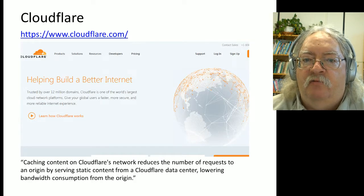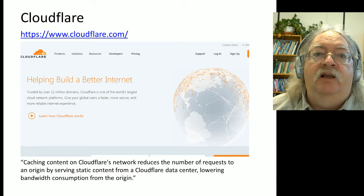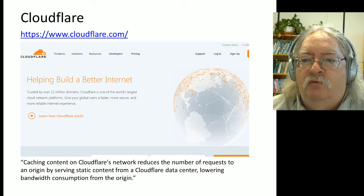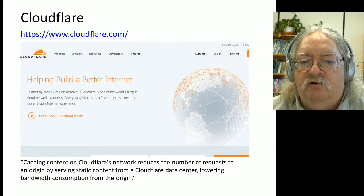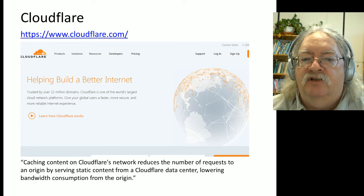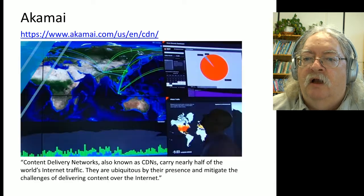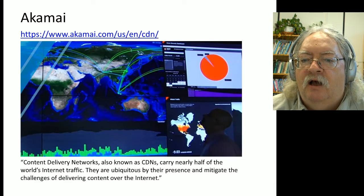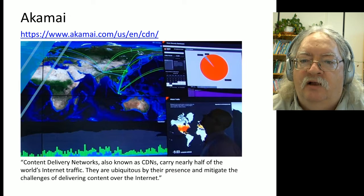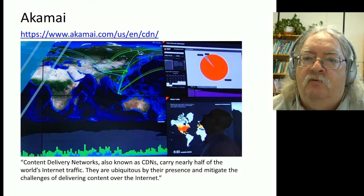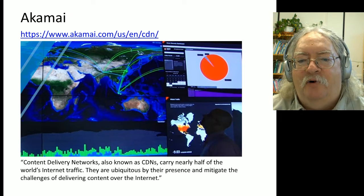One common content delivery network is Cloudflare. They've been around since 2009. You've probably seen Cloudflare stuff - if you watch as your website loads, you'll see calls to Cloudflare or calls to CDN for the individual resources. It serves static content typically from the data center to lower bandwidth consumption. Another one is Akamai, probably the largest of the bunch and certainly the most well-established. They point out on their website that content delivery networks carry nearly half the world's internet traffic, which is interesting considering how silently they operate in the background.